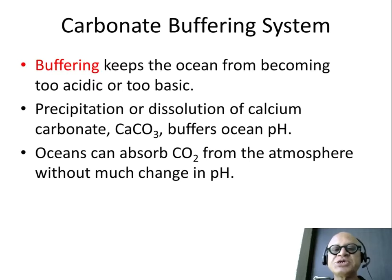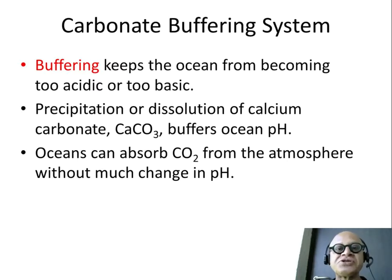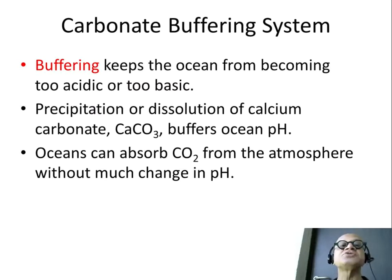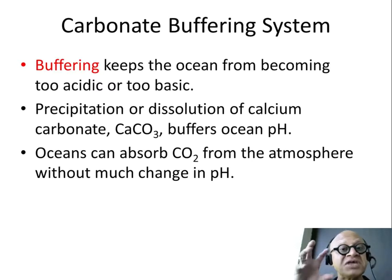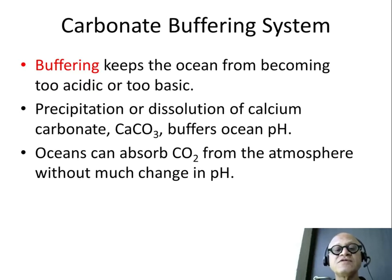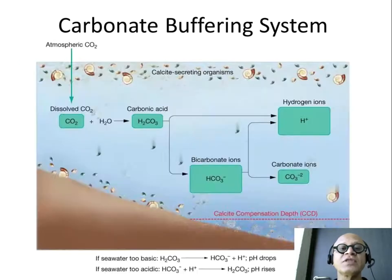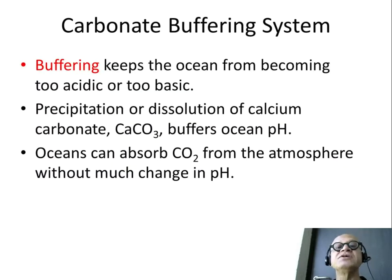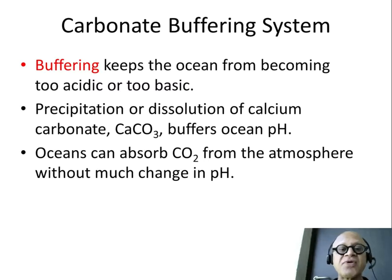How does it work? Through the precipitation or dissolution of calcium carbonate, CaCO3 — this is basically chalk or limestone. Calcium carbonate also turns out to be the shell that many animals in the ocean use to protect themselves. So the precipitation or dissolution of calcium carbonate into the ocean is the main ingredient for buffering the pH of the ocean, and it's what prevents the ocean pH from jumping around very fast.